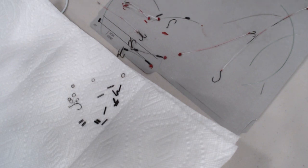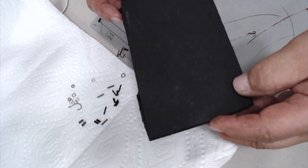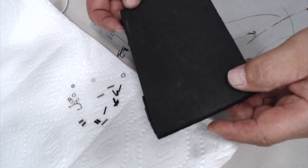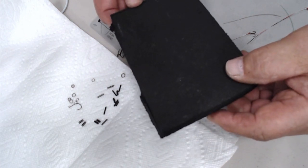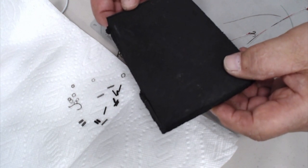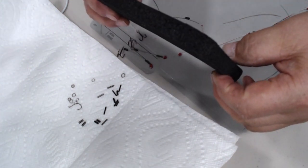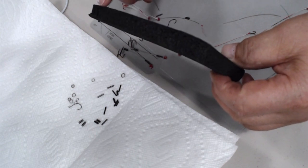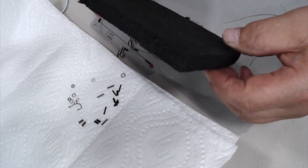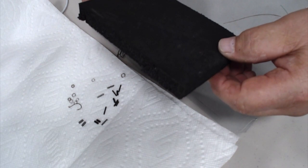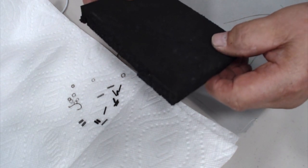This is closed cell foam. It comes in pipe covering when they do air conditioning piping, or the bigger units they actually have it in flat material. This particular material is a half inch thick and it comes in a sheet, and I was able to secure some many years ago.